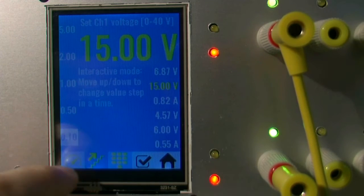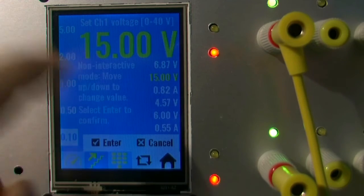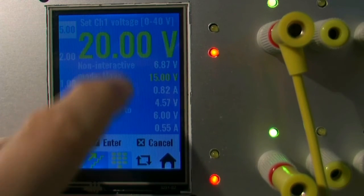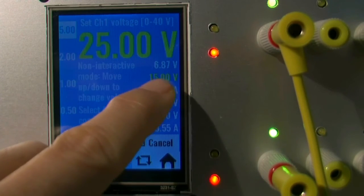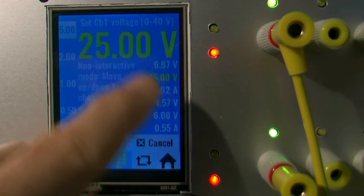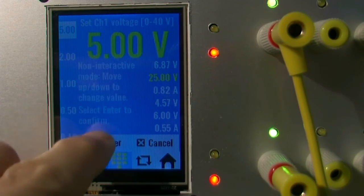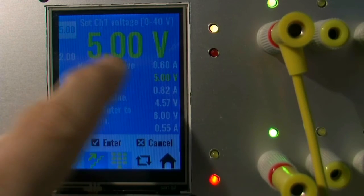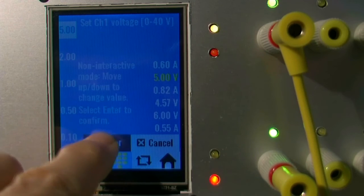Again, as in slider mode, it's possible to use non-interactive mode. So let's say I want to go to 25 volts from currently 15, I just need to press enter and now it's here, or go to another direction and you can see here.